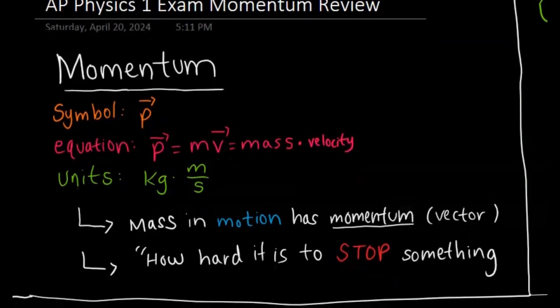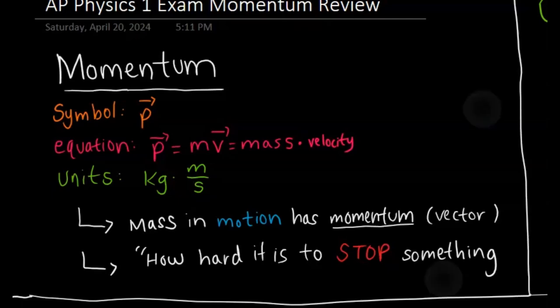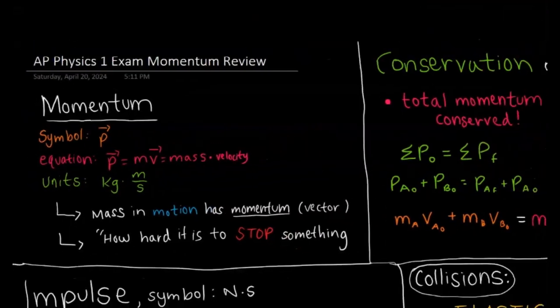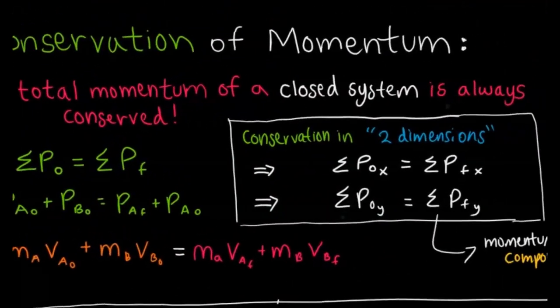Momentum is a vector denoted by P and it's equivalent to mass times velocity. Its units are kilograms times meters per second. A mass in motion will have momentum, and you can think of momentum as how hard it is to stop something.